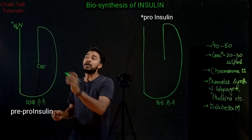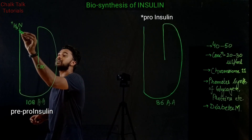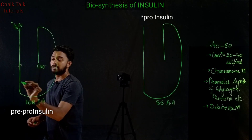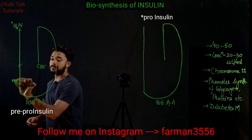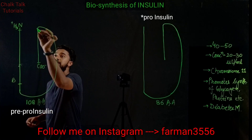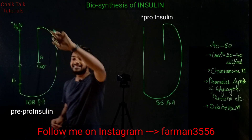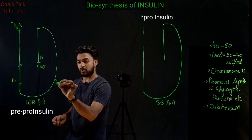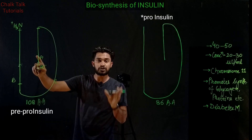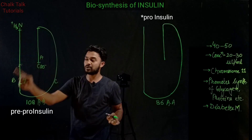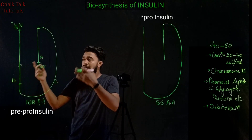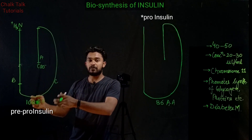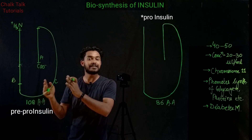We also need to understand the structure of the B chain and A chain. The B chain is a little bigger, and the A chain is smaller. The curved structure in the middle is the C chain. So the A chain is small in length, while the B chain is comparatively longer with more amino acids. This is the structure of pre-pro-insulin, the first precursor of insulin.